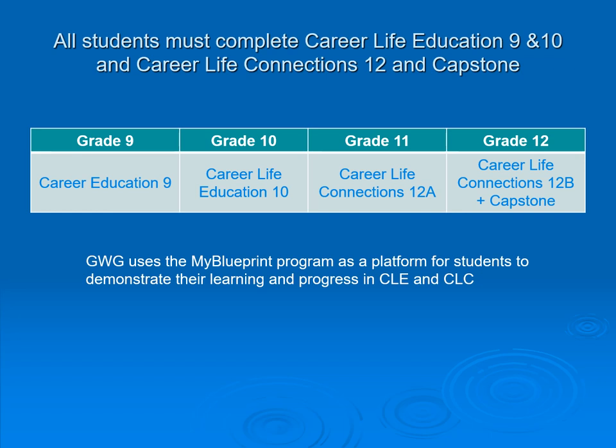Students must also complete Career Life Education 9 and 10, and Career Life Connections 12, and the Capstone. At GW Graham, in Grade 9 we are doing Career Life 9; Grade 10, Career Life Education 10; Grade 11, Career Life Connections 12A; and in Grade 12, Career Life Connections 12B plus Capstone. For Grades 10, 11, and 12, GW Graham uses the My Blueprint program as a platform for students to demonstrate their learning and progress in Career Life Education and Career Life Connections. Please note that Career Life Education and Career Life Connections is a graduation requirement, required by the Ministry of Education. If you have any questions, please contact your student's counselor.